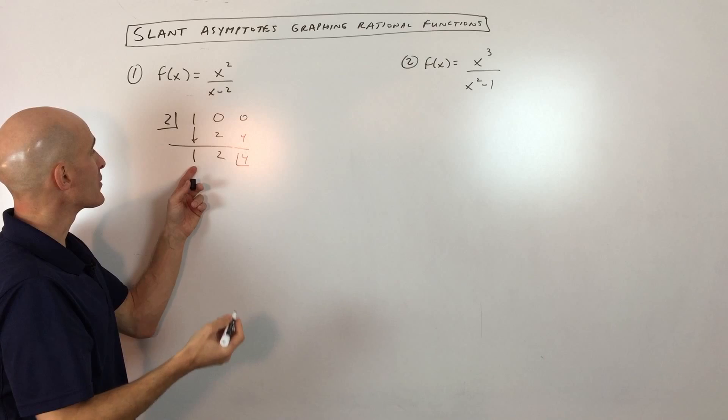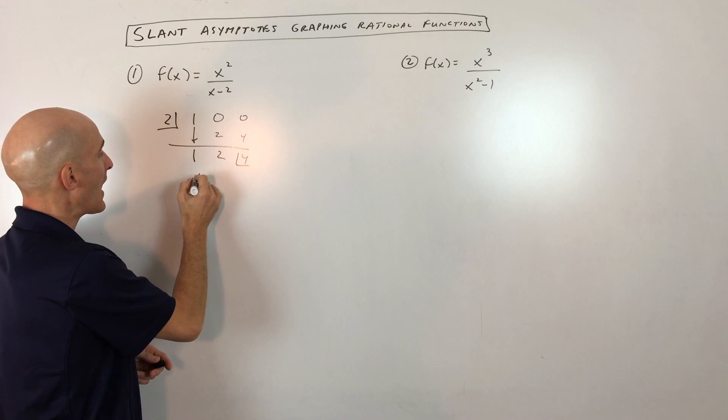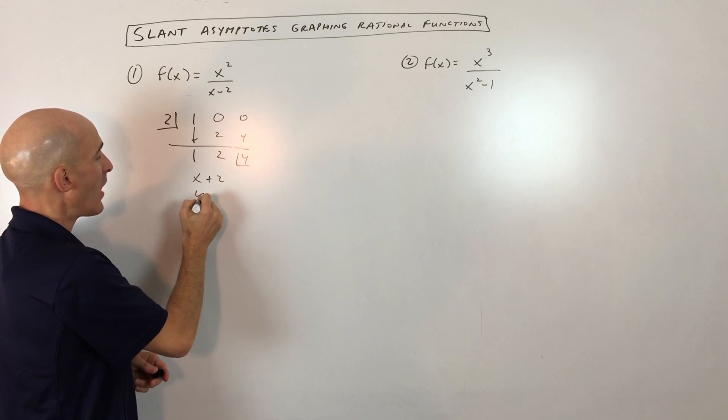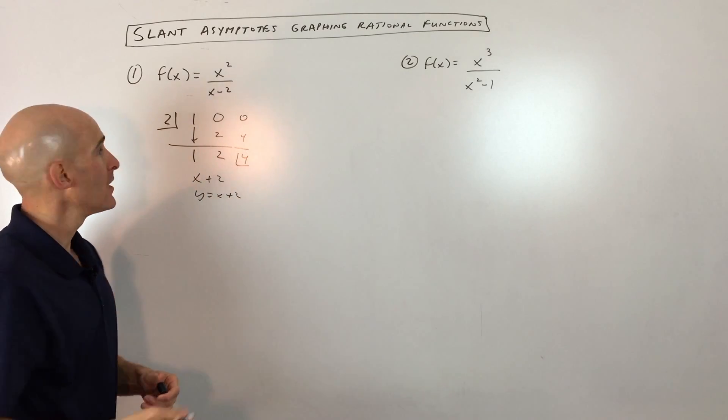What we end up getting here is we end up getting x plus 2. So y equals x plus 2 is our slant asymptote.